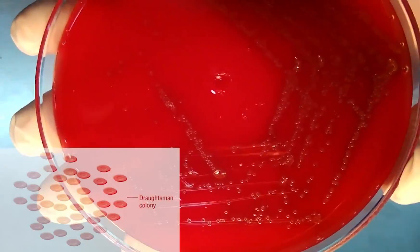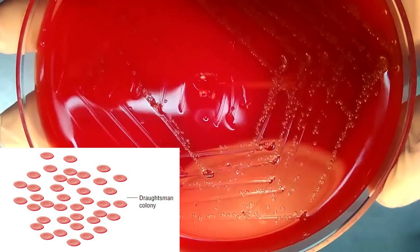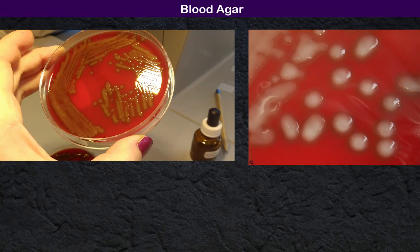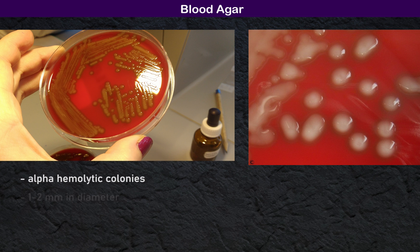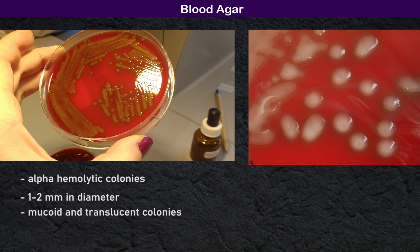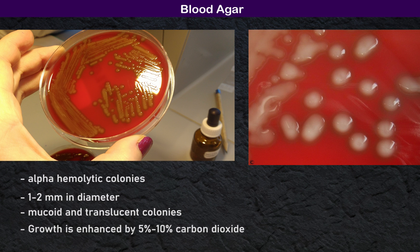Colony morphology: S. pneumoniae is considered a fastidious organism. The colonies have a draftsman appearance on cultures. On blood agar, they produce alpha-hemolytic colonies. When incubated overnight in aerobic conditions at 37°C, colonies are 1 to 2 millimeters in diameter and produce mucoid and translucent colonies. Mucoid colonies are usually produced by pneumococci that produce large amounts of capsule. Growth is enhanced by 5 to 10 percent carbon dioxide.